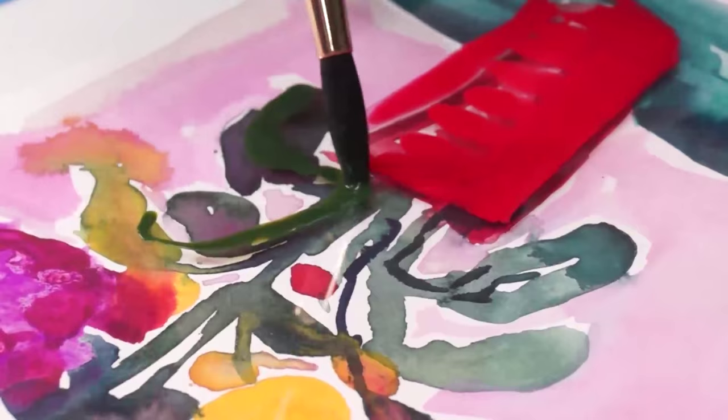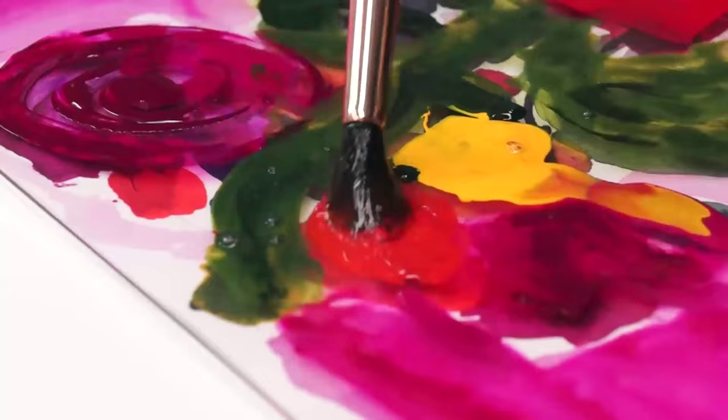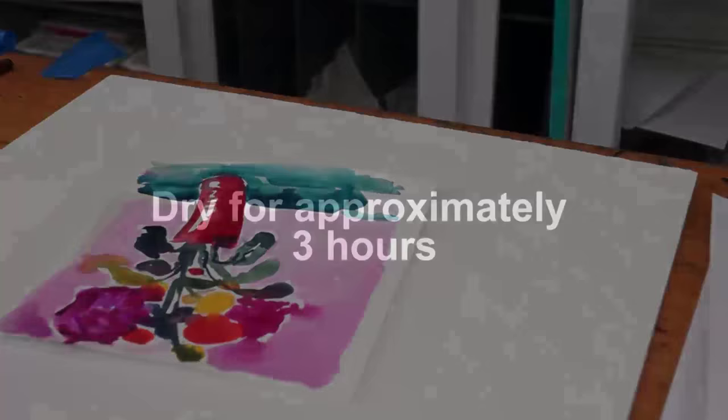The more water that you have mixed into the core the more you're going to get the breaking up of color. So you can play back and forth with how much water you add to the pure core on your palette. Once you've completed your painting then we need to let this dry completely.